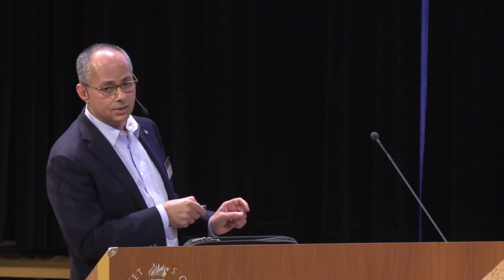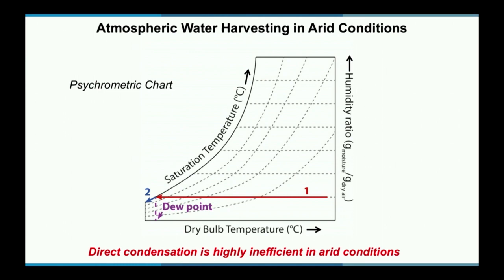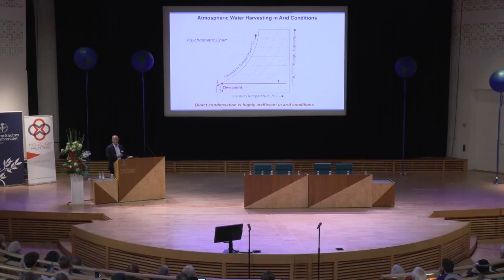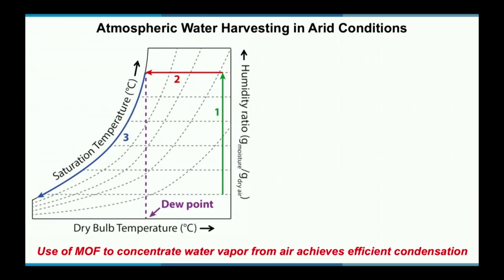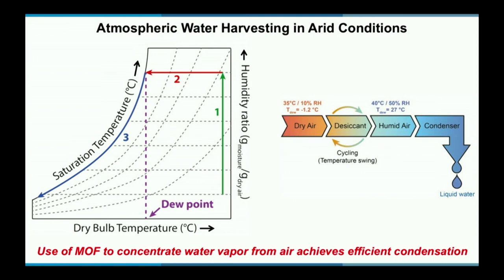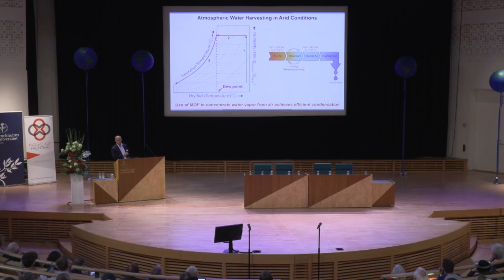Why is that? Because at low humidity, in order to saturate the air with water and get to the dew point — the point at which water can be condensed — you have to cool the air down to almost zero, even below zero degrees C. This is highly inefficient and requires a lot of energy. With a MOF, you can trap the water, concentrate it in the MOF, and therefore you have high humidity — and you don't need to cool down very much to achieve the dew point. The MOF is our desiccant. If you can take air that would have to be cooled to −1.5°C and trap the water in the desiccant, now your dew point is 27°C. You can easily condense that water. That's what the MOF does.